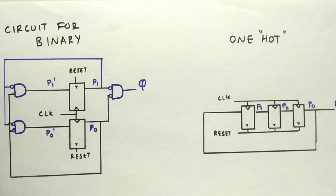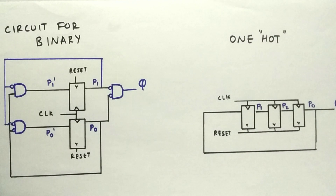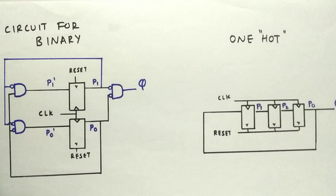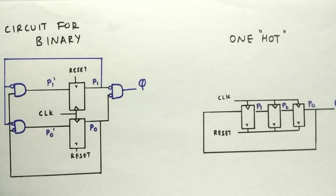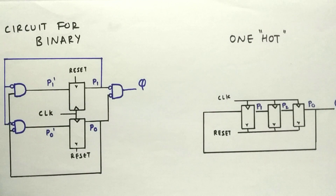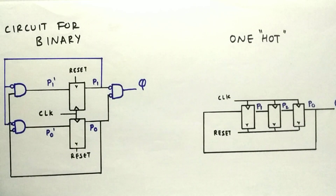Please look at both circuits now. There is a difference, but the functionality of both circuits is the same. This difference occurs because we represented the states in a different manner. In the binary encoded scheme, we use fewer bits to represent all the states, whereas in one-hot encoding, each state has its own state variable — that's why the circuits differ.